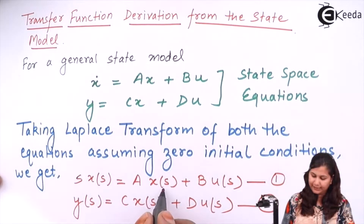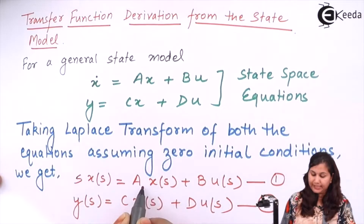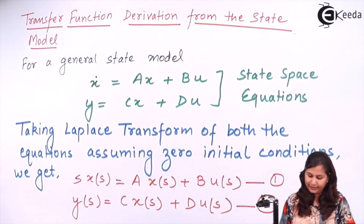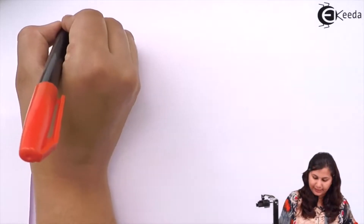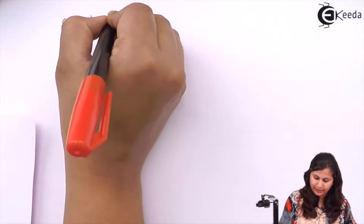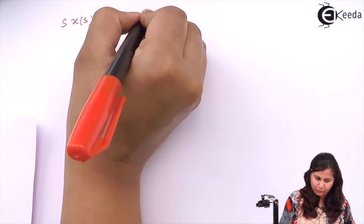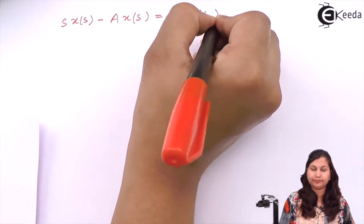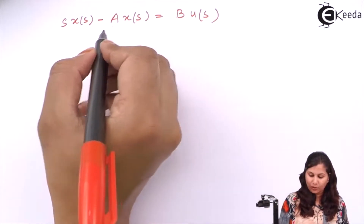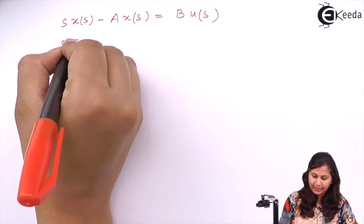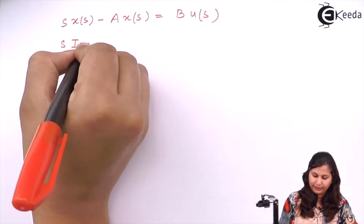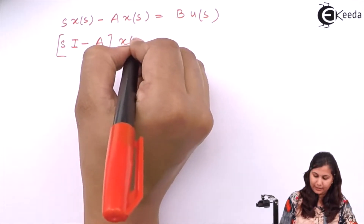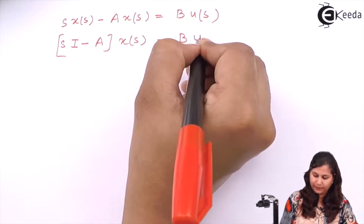From these two equations, taking AX(s) to the left-hand side, it becomes sX(s) minus AX(s) equals BU(s). Taking X(s) common, we get (sI minus A) times X(s) equals BU(s).